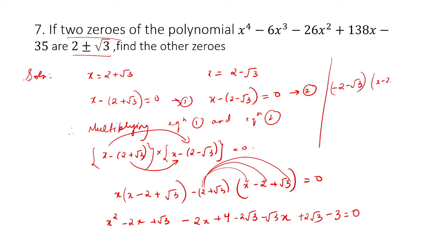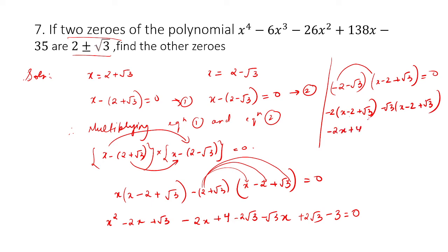Some of you might still be confused — if you can do this directly, well and good. If not, you can follow this step and open up the bracket in the exam. After cancelling like terms — minus 2 root 3 and plus 2 root 3 cancel, plus root 3 x and minus root 3 x cancel — the equation becomes x squared minus 4x plus 4 minus 3 equals 0, which gives x squared minus 4x plus 1 equal to 0.